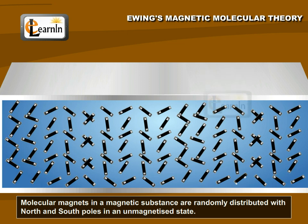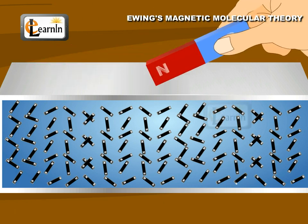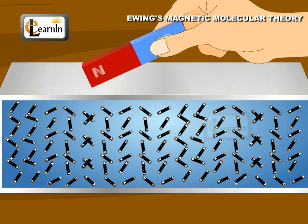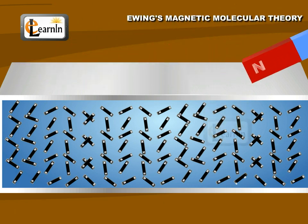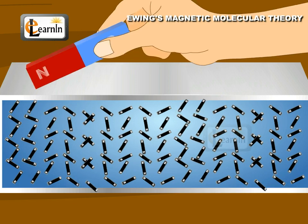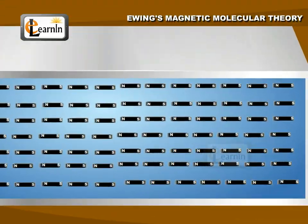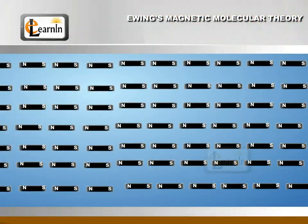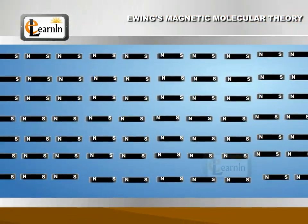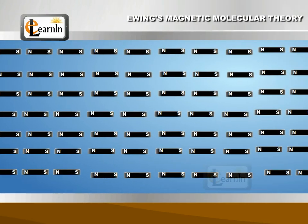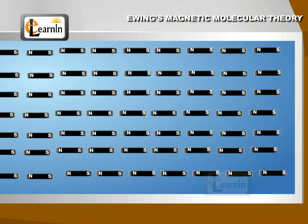When the iron bar is magnetized with the help of a magnet, the molecular magnets arrange themselves in an orderly way. The order is due to the pointing of all N poles of the individual molecules in one direction and all the S poles in the opposite direction.